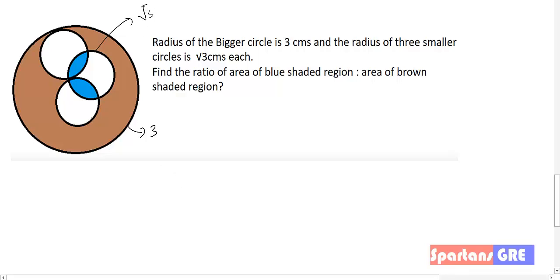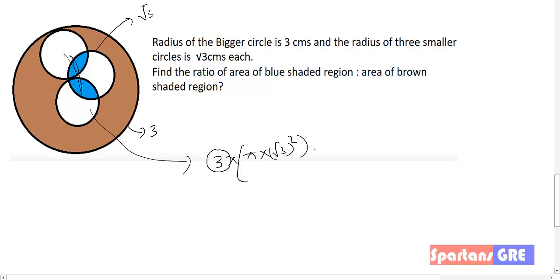Let's find the sum of the areas of all 3 smaller circles. It will be 3 times π r², where the radius is √3, so 3 × π × (√3)² = 3 × π × 3 = 9π. Now the area of the bigger circle is π × 3² = 9π.